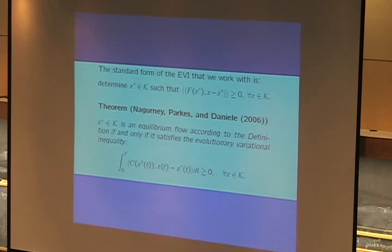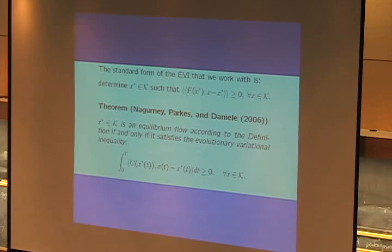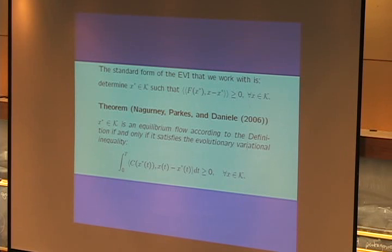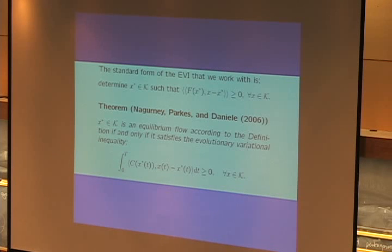So we're dealing now with an evolutionary variational inequality. It's a time-dependent variation problem. We have a theorem - this was finished last year while I was a science fellow at the Radcliffe Institute at Harvard. With David Parkes, a computer scientist - we say that f-star, a vector of flows which are time-dependent, is the equilibrium flow according to this definition if and only if it satisfies the evolutionary variational inequality.